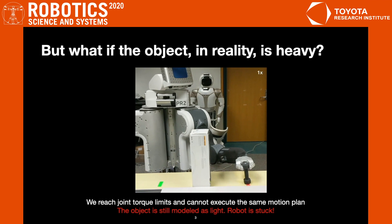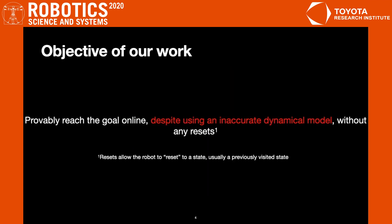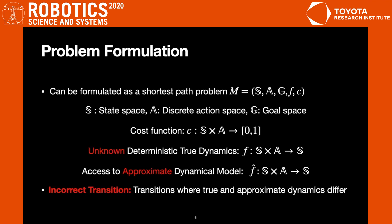Our objective in this work is to come up with an approach which provably guarantees that the robot will reach the goal online despite using an inaccurate dynamical model. We consider the reset-free setting where the robot has no ability to reset to a particular state and hence needs to reason online. This can be formulated as a shortest path problem consisting of a cost function c that maps any transition to a bounded cost between 0 and 1, and the unknown true deterministic dynamics function f that maps any transition to its successive state.